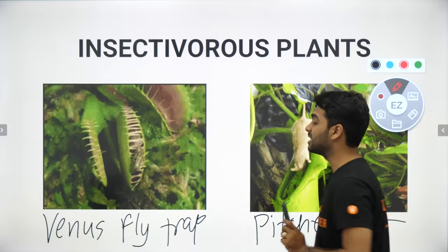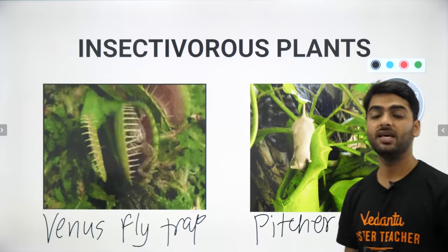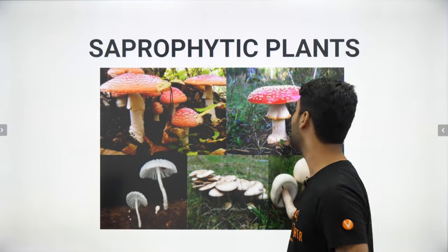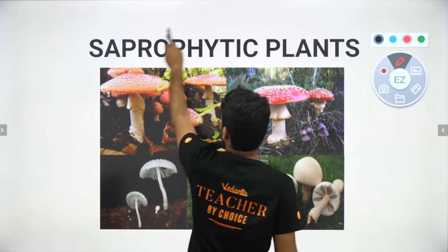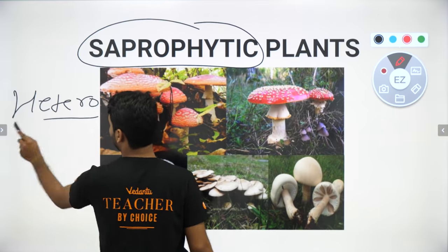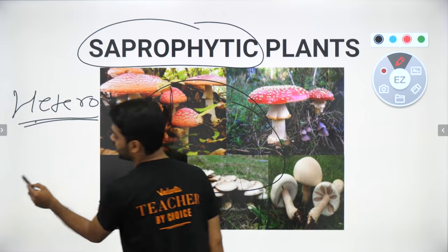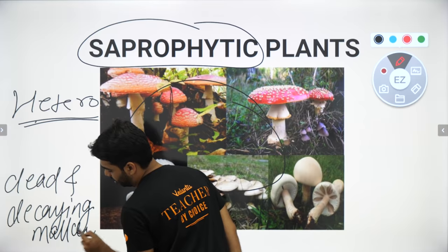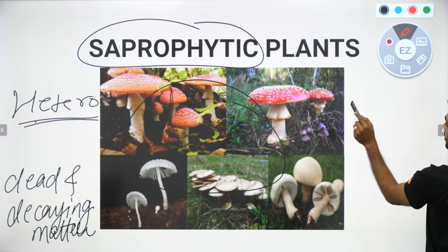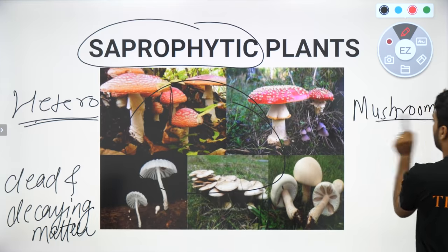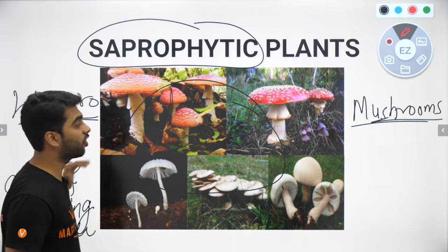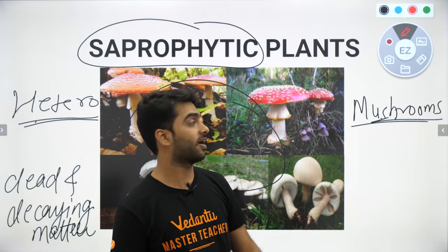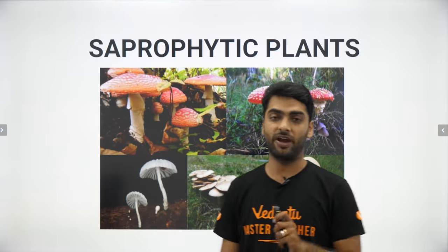The Venus flytrap and the pitcher plant are examples of insectivorous or heterotrophic plants, dependent on other organisms to fulfill their nutritional needs. Next are saprophytic plants — another heterotrophic mode of nutrition. These plants, for example mushrooms, feed on dead and decaying matter. The example of saprophytic plants is mushrooms, which are heterotrophic plants feeding on dead and decaying matter to fulfill their needs.